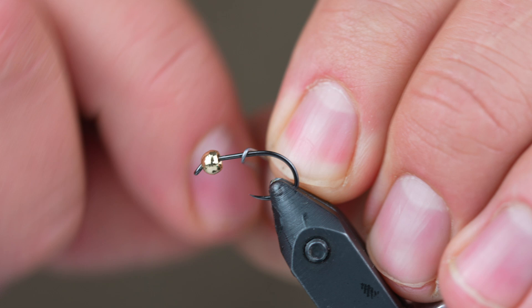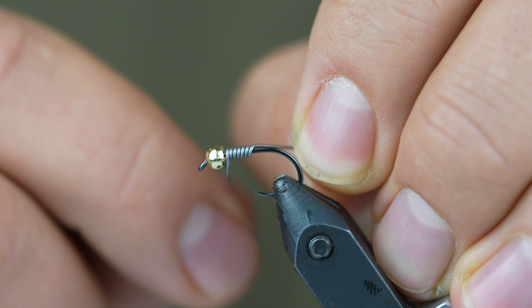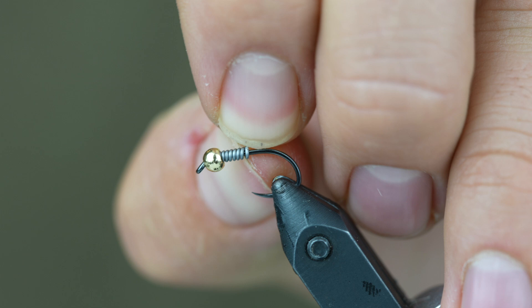So for a 2.8 millimeter bead I would probably use .015, and for a larger bead like a 3.8 I would probably use .025 diameter wire.